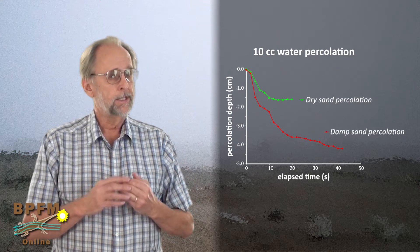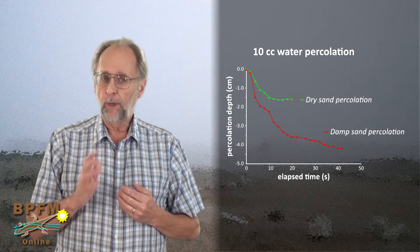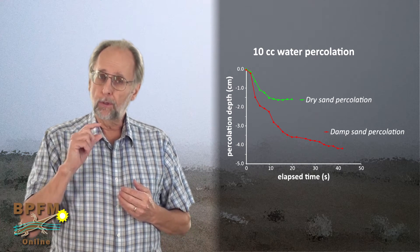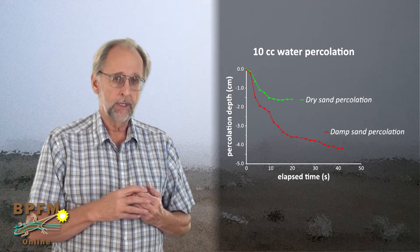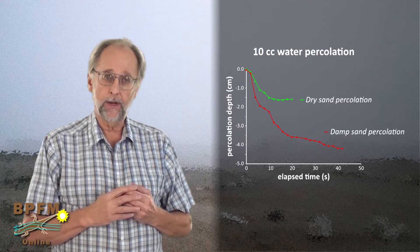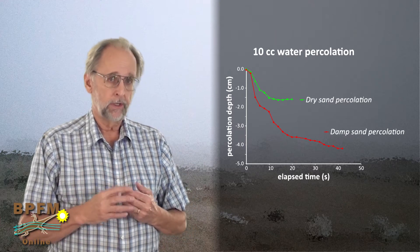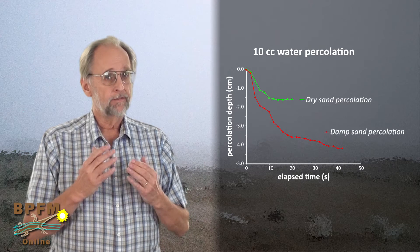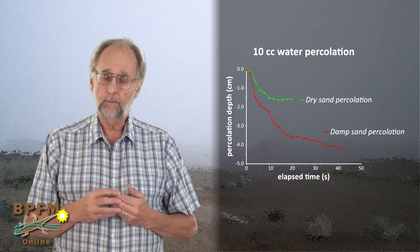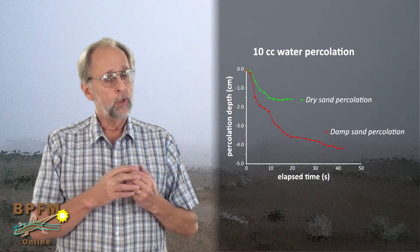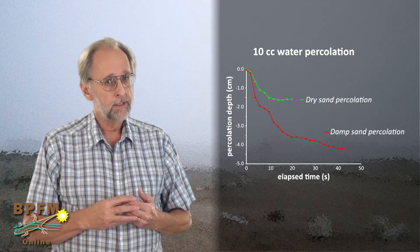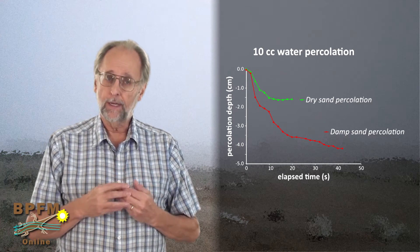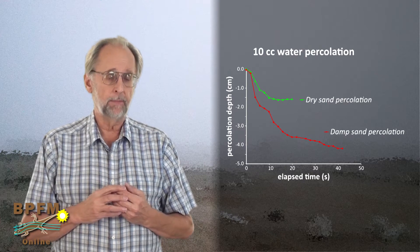The difference is quite obvious. When the sand is dry, water percolates downward to only about one and a half centimeters depth, and then it stays there. When the soil is slightly damp, however, water percolates farther downward and faster. By the time one minute has passed, the water in the damp sand has percolated downward to four and a half to five centimeters depth.